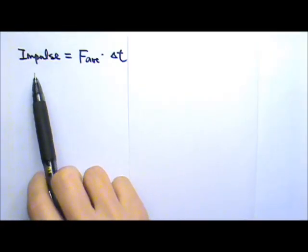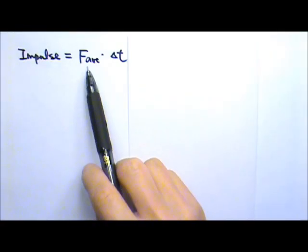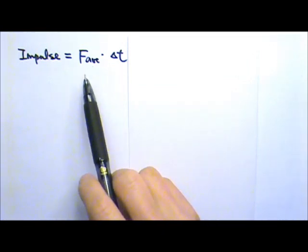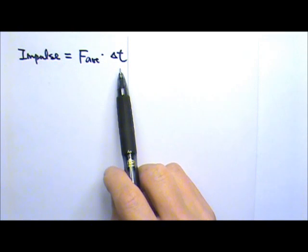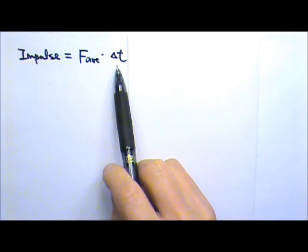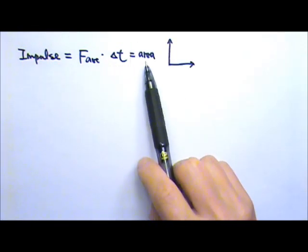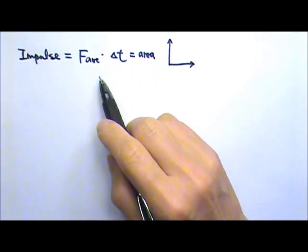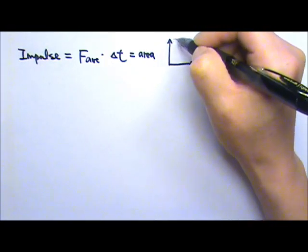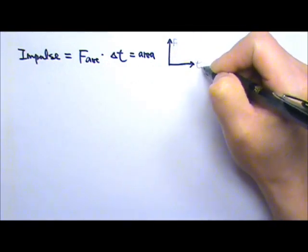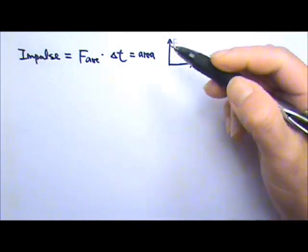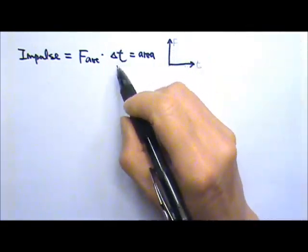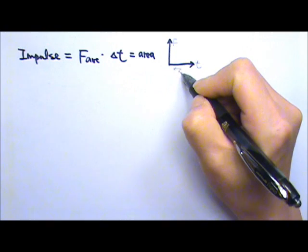Now let's look at this thing called impulse. The definition for impulse is average force times time. When we multiply like this, it means height times base, so it is the area of a graph. Impulse must be the area of a force versus time graph, since the height is F and the base is delta T.